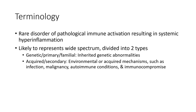It likely represents a wide spectrum divided into types: genetic primary familial, with inherited genetic abnormality; and acquired secondary, involving environmental or acquired mechanisms such as infection, malignancy, autoimmune condition, and immunocompromised states.